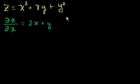And then what's the derivative of y squared with respect to x? Well, we're assuming y squared is a constant. It's just a number, right? y is just a number. So the derivative of just a number with respect to x is just 0. So the derivative of that is 0. So the partial derivative of z with respect to x is 2x plus y.